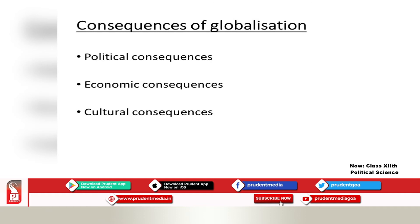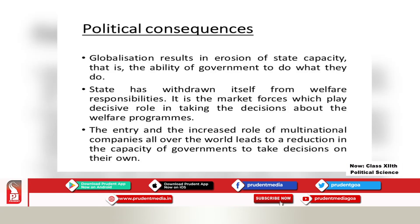Now we will try to understand different consequences of globalization. We have political, economic and cultural consequences. First, we will see political consequences or the impact of globalization on state. Globalization results in erosion of state capacity — that is, the ability of government to do what they do. The state has withdrawn itself from welfare responsibilities. It is the market forces which play a decisive role in taking decisions about welfare programs. Because of globalization, the role of state becomes very less, becomes minimum, and there are other factors which play an important role.